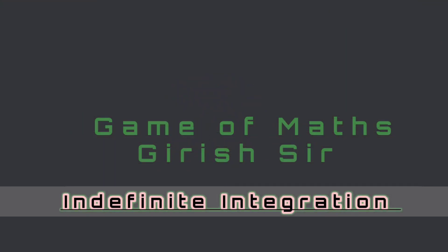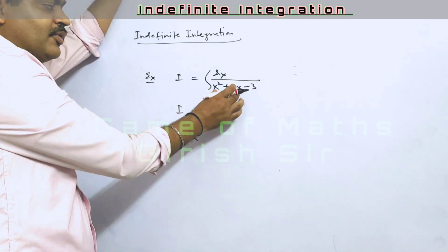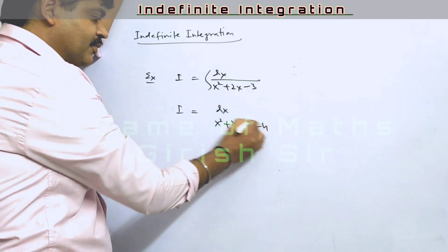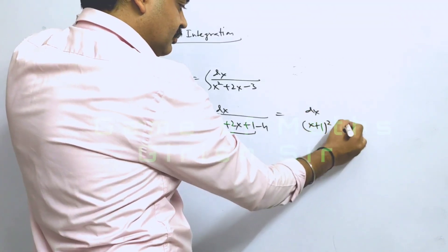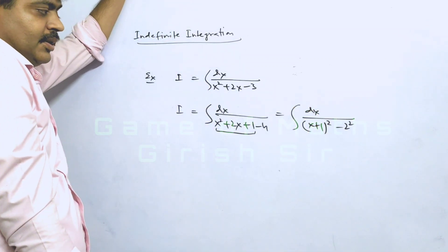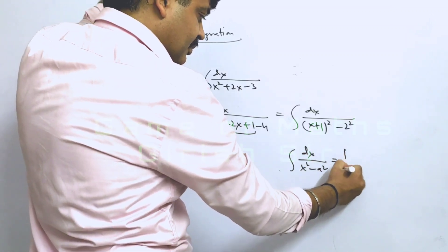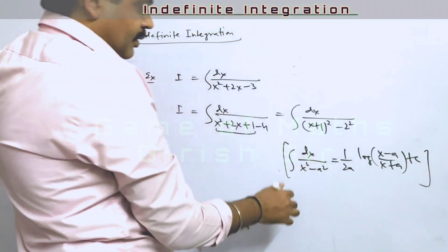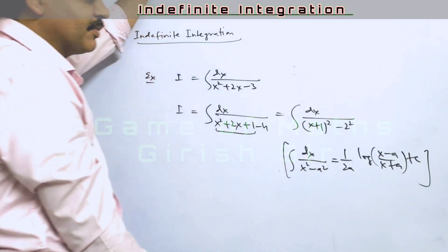Let's try another example. Step 1: check the coefficient of x squared — it is already 1. Now we make a perfect square from the terms containing x. I can write −3 as 1 − 4, so these three terms form a perfect square. The integral is then reduced to the form dx/(x² − a²) type.